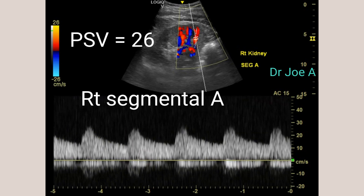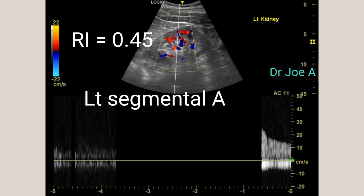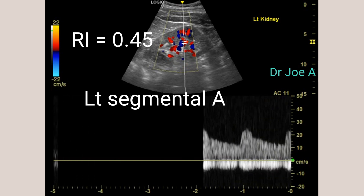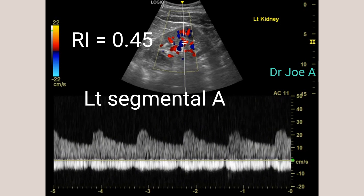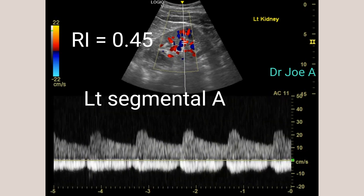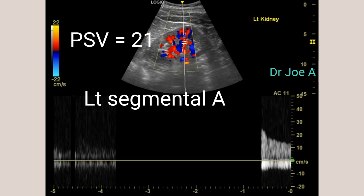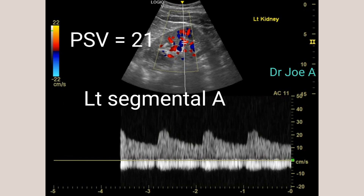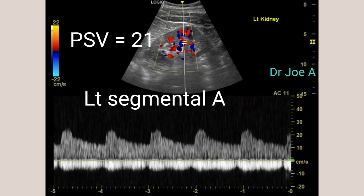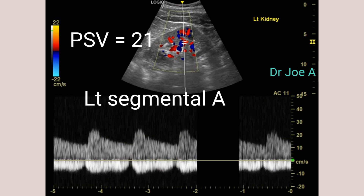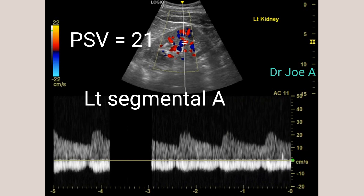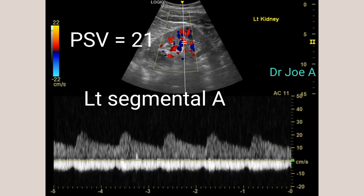The systolic upstroke in the renal arteries is sharp and well defined. The second part of the diastolic phase shows a rapid deceleration during diastole, resulting in a distinct diastolic phase with continuous flow during diastole. The third phase is the end-diastolic phase, which occurs just before the start of the next systolic phase and is the last component of the waveform, represented by a small positive deflection. The end-diastolic phase represents the lowest velocity of blood flow during the cardiac cycle in the renal arteries.